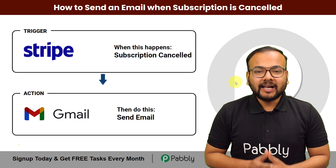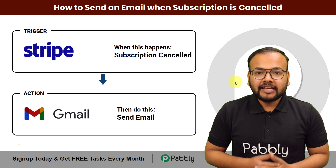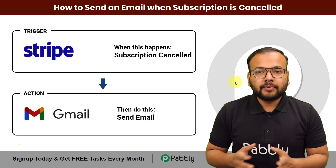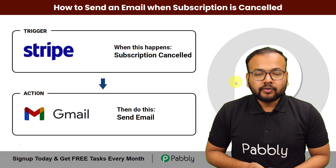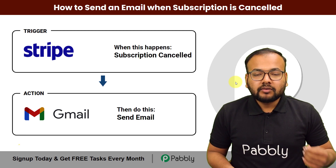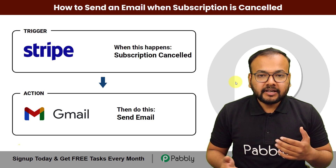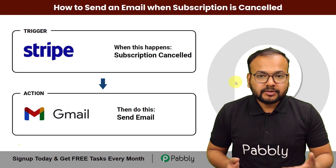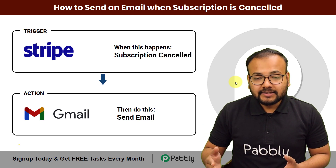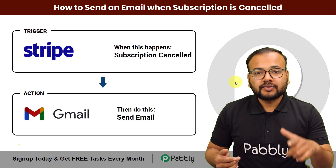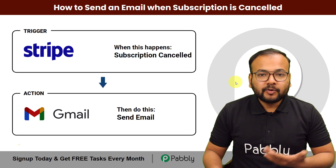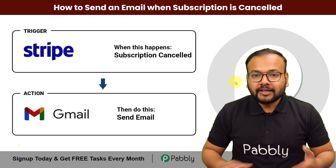In this video you will learn how you can send a transactional email to your customers automatically when they cancel their subscriptions. Here I am going to take an example of a course running on a subscription-based model, sold through Stripe, which is a payment gateway. Whenever a customer cancels their subscription, an email will be delivered to that customer automatically — and we are going to set up this automation without any coding.